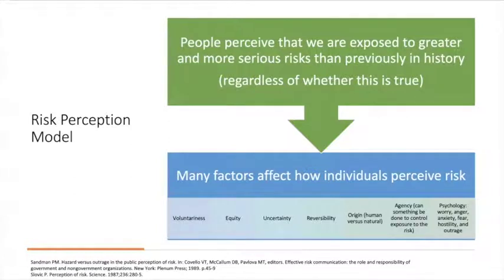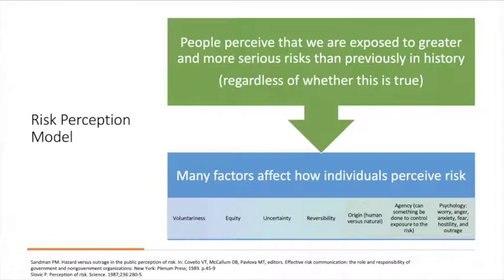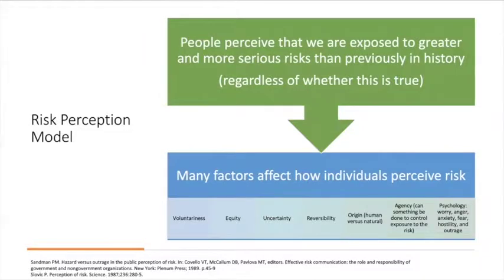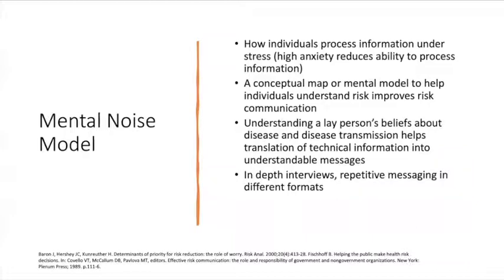Thinking about risk in terms of participation and whether it's voluntary in risk mitigation strategies, the equity with which people feel that risk, the uncertainty around exposure and outcomes, whether the consequences are reversible, and whether the origin of risk is human-centric or naturally occurring — all these change people's perceptions. People's agency — their ability to do something about their exposure — and how they feel about that exposure, whether worried, angry, or anxious, can change the effectiveness of different messaging.